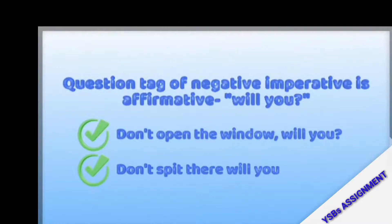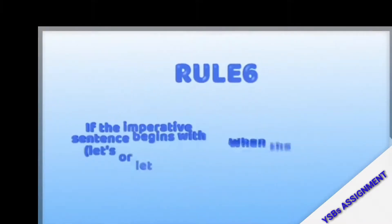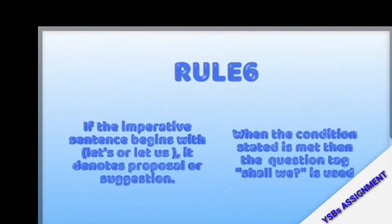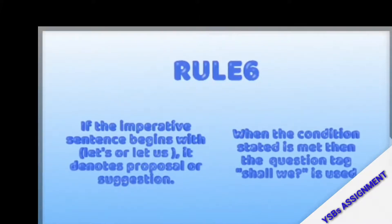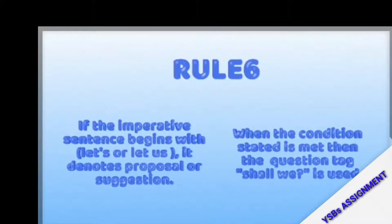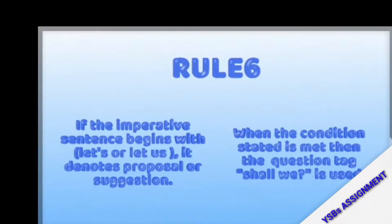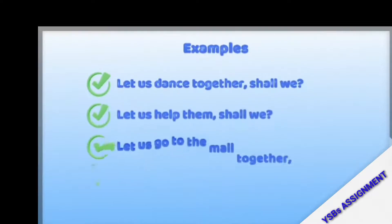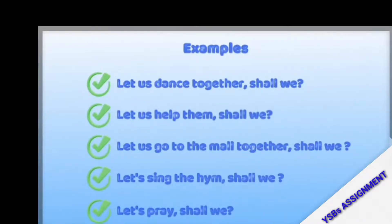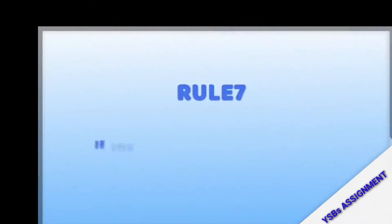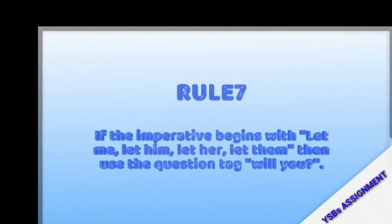Rule number five: the question tag of a negative imperative is affirmative. Example: 'Don't open the window, will you?' / 'Don't spit there, will you?' Rule number six: if the imperative sentence begins with 'let us' or 'let's,' it denotes a proposal or suggestion, and the question tag 'shall we' is used. Examples: 'Let us dance, shall we?' / 'Let us help them, shall we?' / 'Let us go to the mall together, shall we?' / 'Let's pray, shall we?'